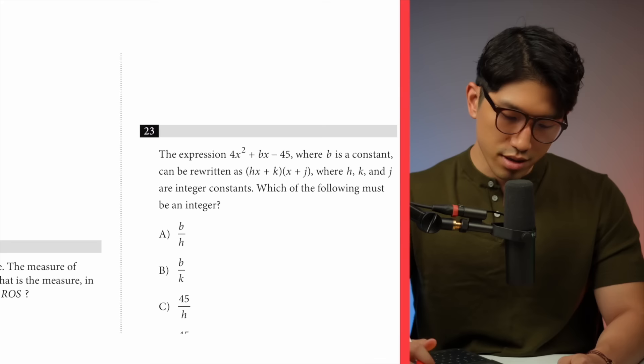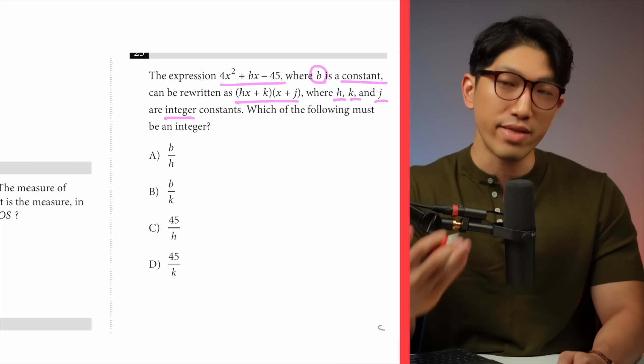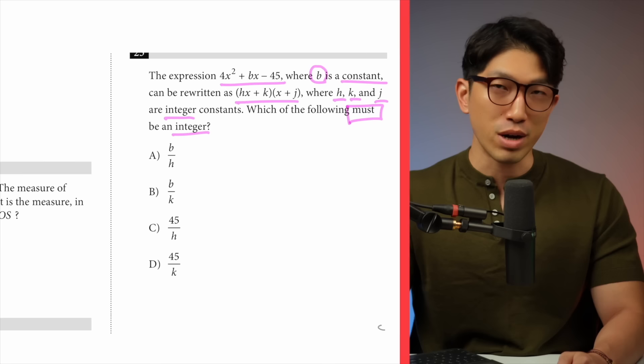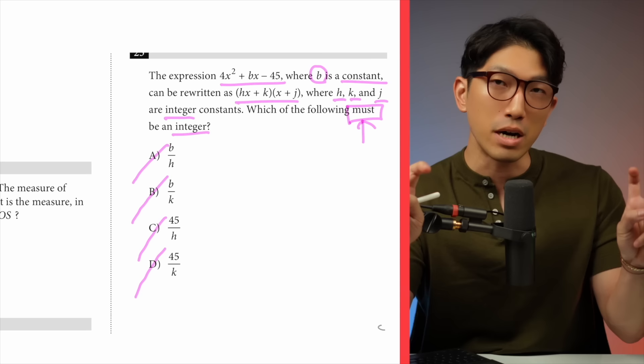The next question says: in the expression shown, b is a constant and it can be written in the factored form where h, k, and j are integer constants — meaning whole, non-decimal numbers. Which of the following must be an integer? This is a must-be-true question, and the key is to knock out as many answer choices as possible by looking for exceptions. If there's an exception to the rule, it can't be must be true. So let's tackle this question.